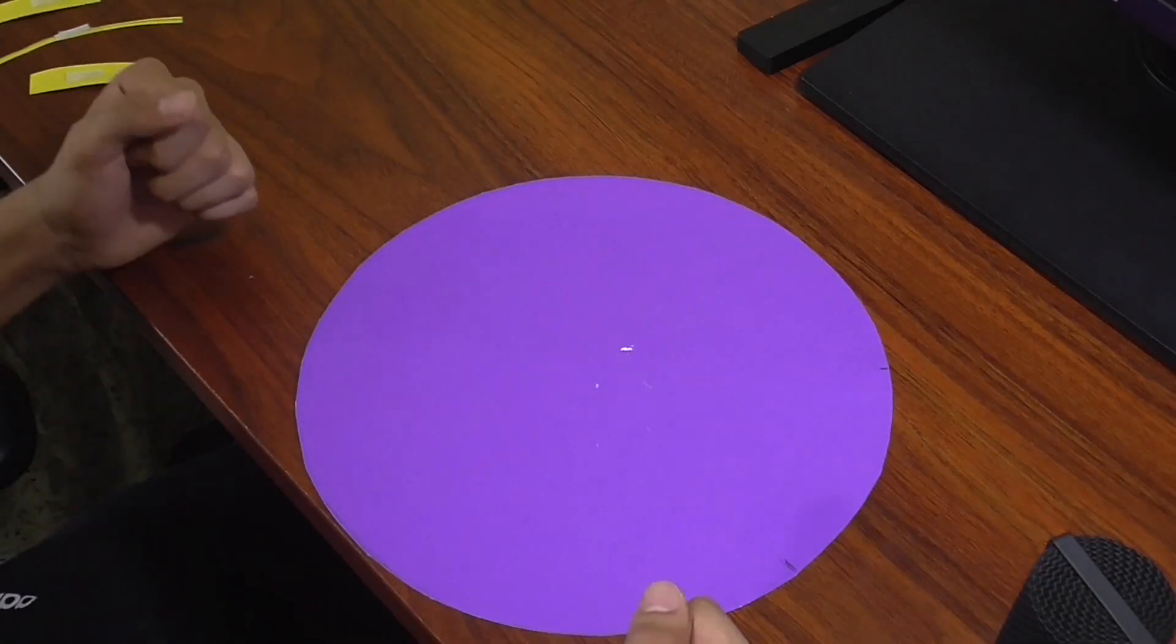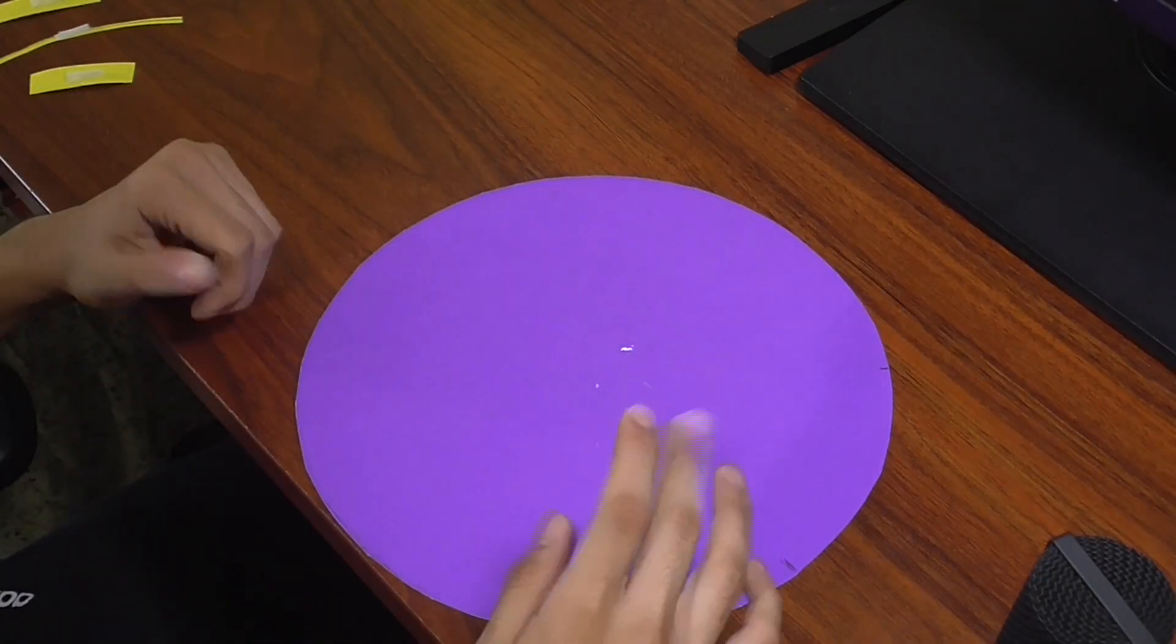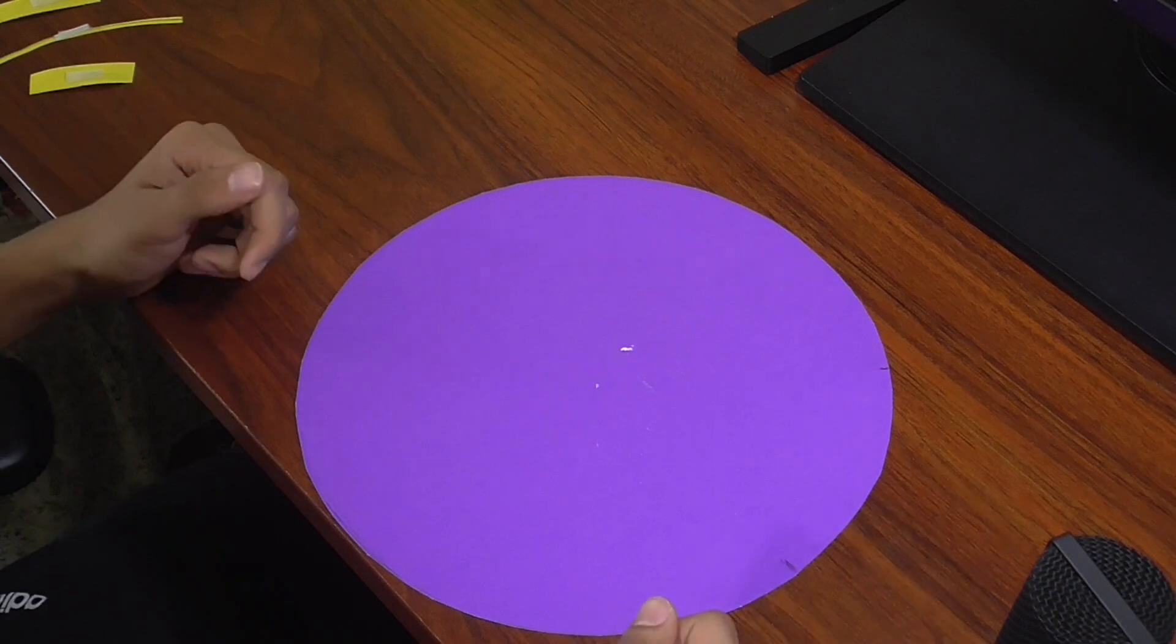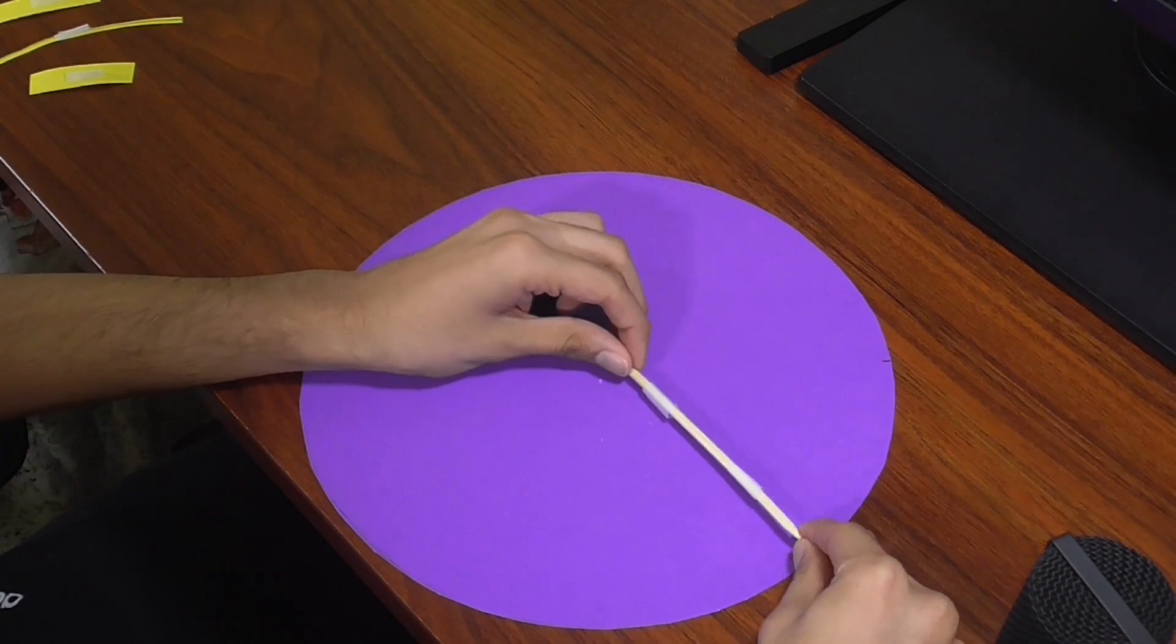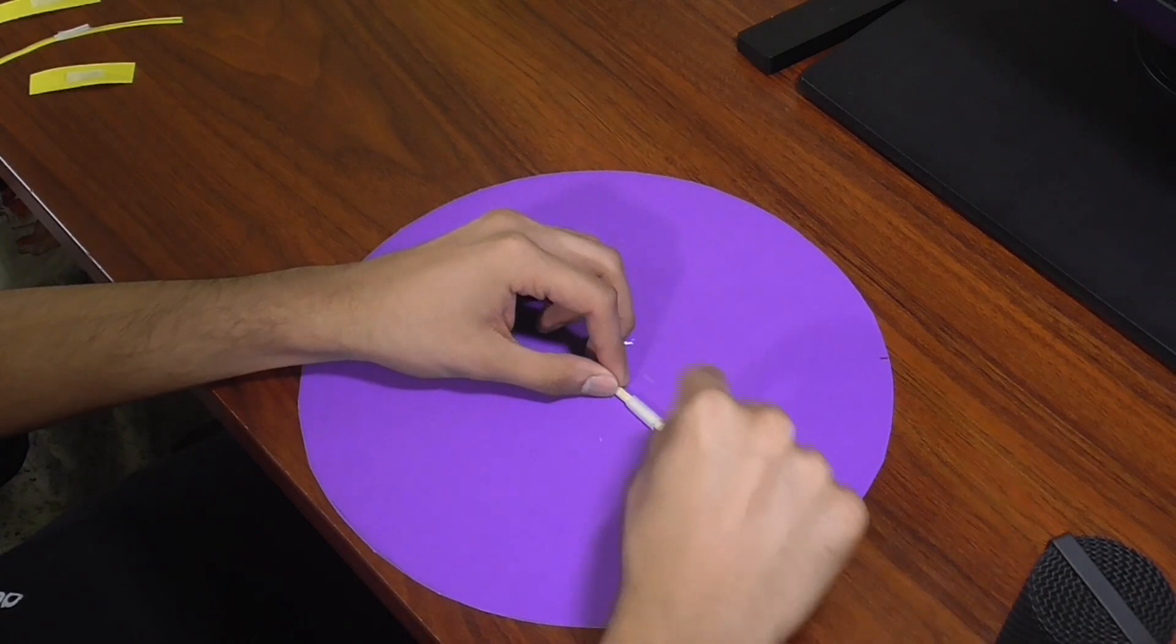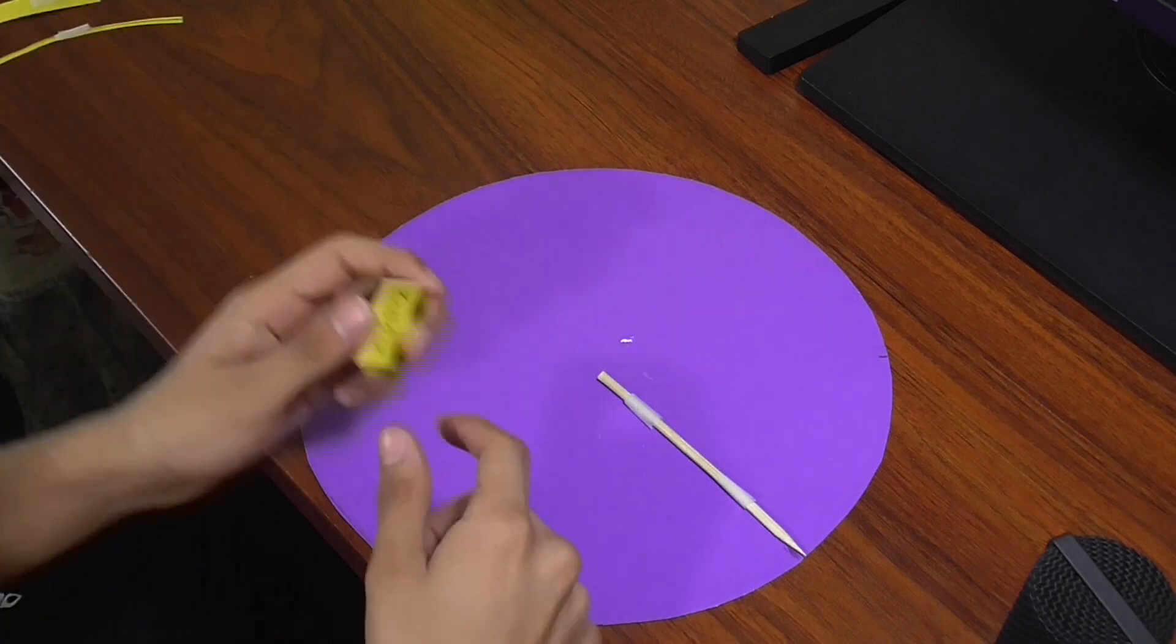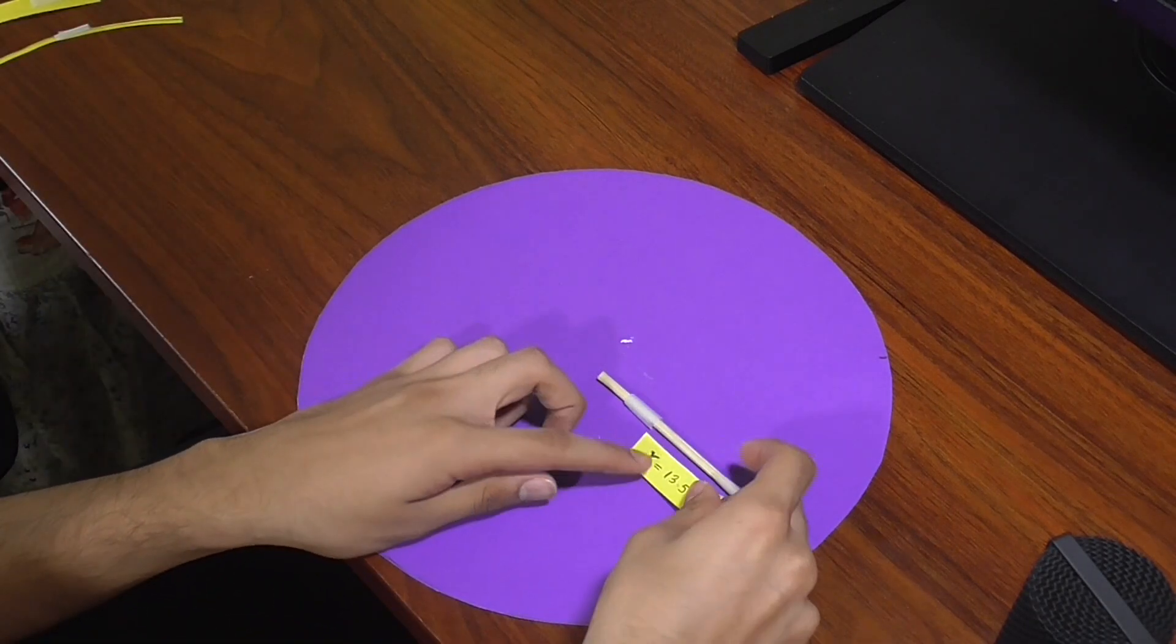To understand solid angles, let's start with two-dimensional concepts which we're more familiar with. Here's a circle with a radius of 13.5 centimeters.